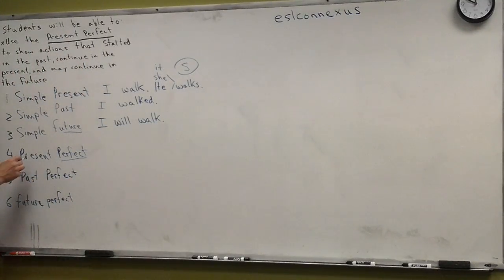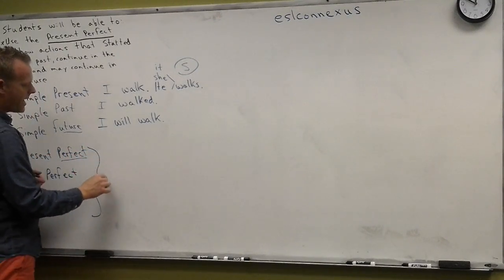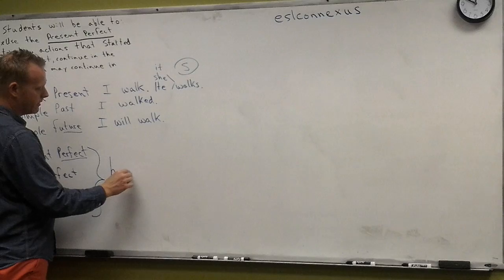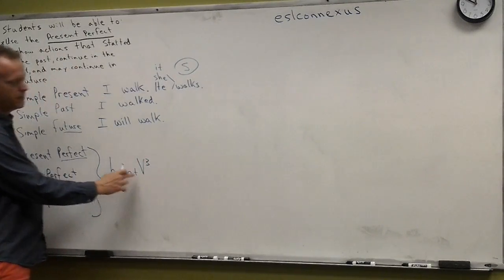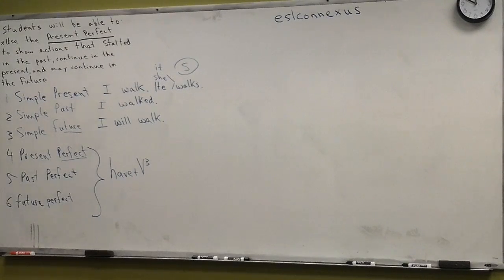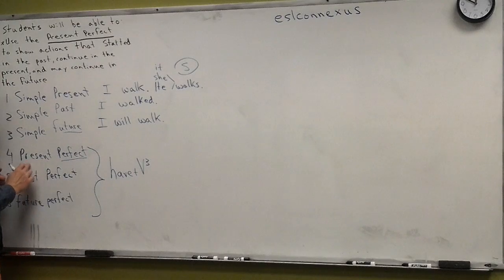Now, listen. For each one of these, you have to use a form of have plus verb three. Verb three is the past participle. You have to use a form of have plus verb three. So, today, we're talking about the present perfect.